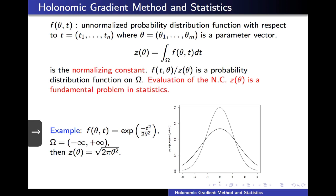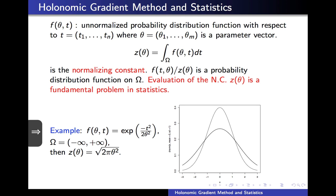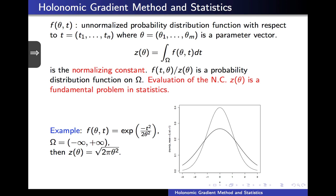This is a very famous probability distribution — the normal distribution. For this unnormalized distribution f, the normalizing constant is this function. Numerical evaluation of the normalizing constant z of theta is a fundamental problem in statistics.